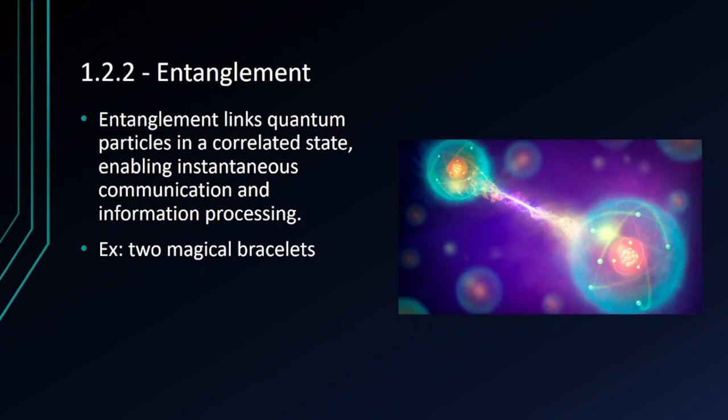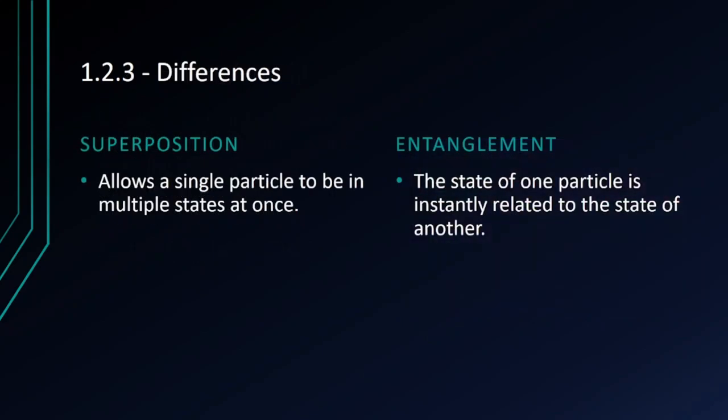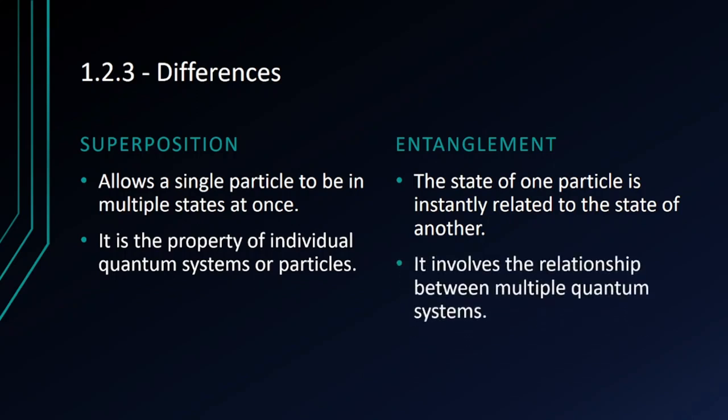Now let us learn the differences. Superposition allows a single particle to be in multiple states at once, whereas entanglement means the state of one particle is instantly related to the state of another. Superposition is a property of individual quantum systems or particles, whereas entanglement involves a relationship between multiple quantum systems.